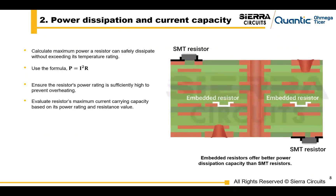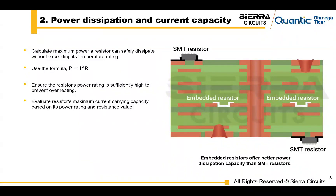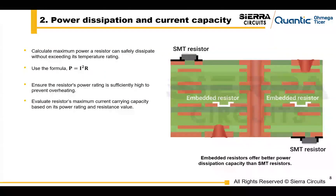In terms of power dissipation and current capacity, you want to ensure that the resistor's power rating is high enough to handle the calculated power dissipation. Always select a resistor with a power rating that provides a safety margin above your requirements, as this will help with your long-term reliability.